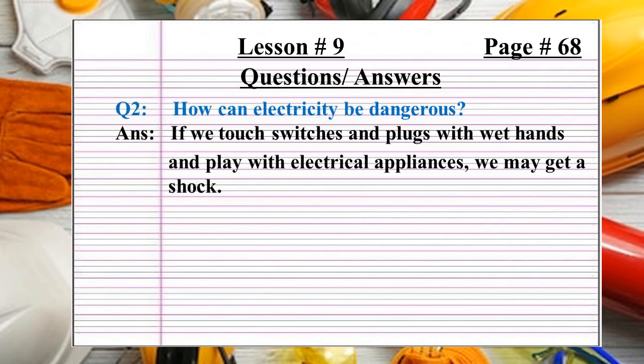Question number two: How can electricity be dangerous? Bijli khatarnaak kaise ho sakti hai? Answer: If we touch switches and plugs with wet hands and play with electrical appliances, we may get an electric shock.